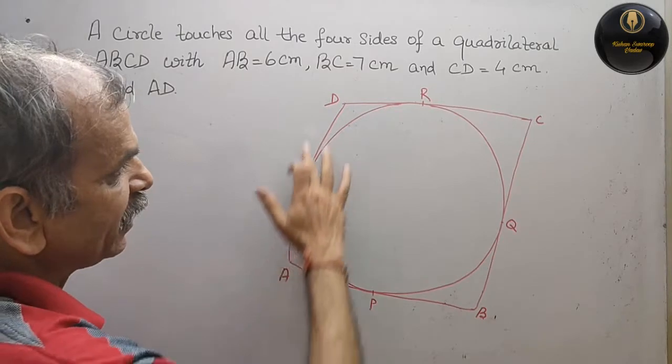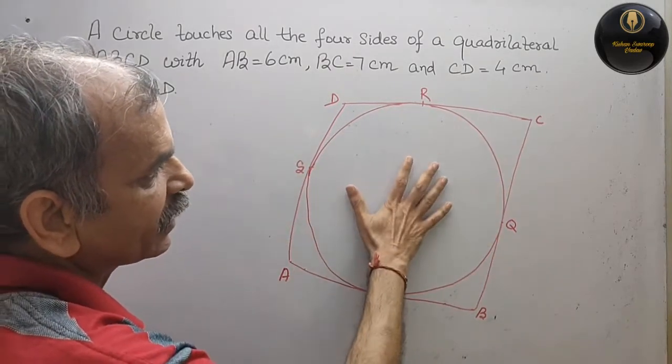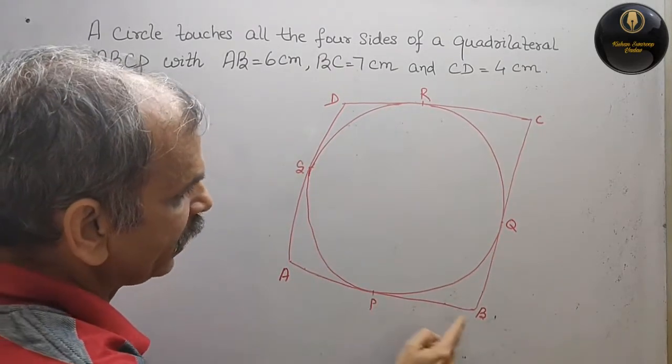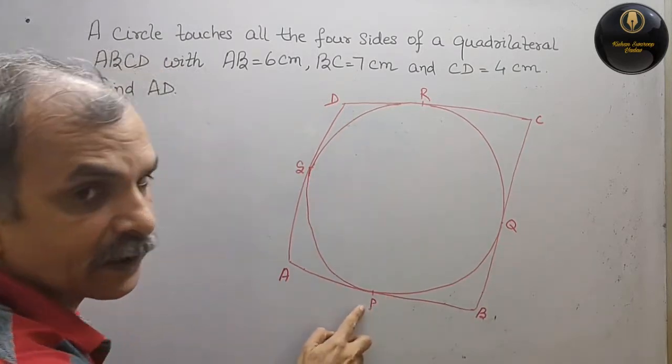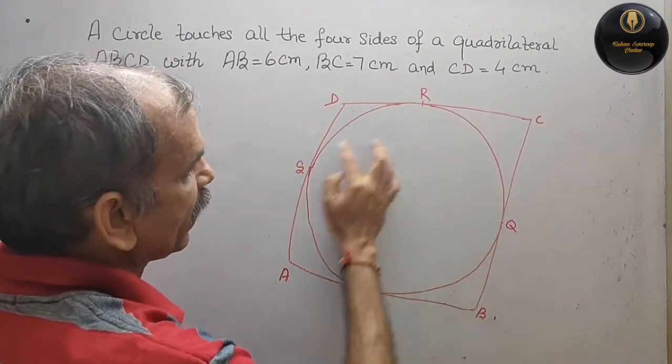Now, you can see the figure is like this. Here it is A, B, C, D and they are touching at P, Q, R and S.